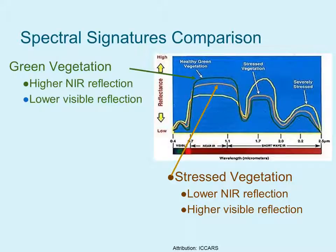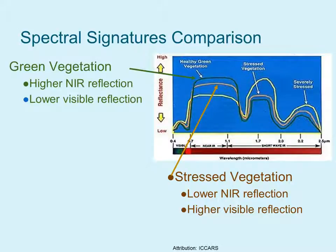Let's compare the spectral signatures of healthy vegetation versus stressed vegetation. In healthy vegetation you can see the higher near infrared reflection between 0.7 to 1.1 microns and the lower visible reflection between 0.4 and 0.7 microns. While in stressed vegetation the near infrared reflection is lower compared to the green vegetation, and the visible reflection is higher.